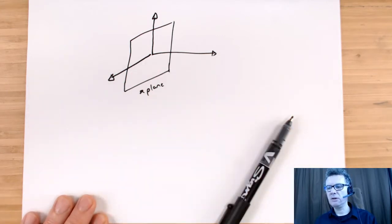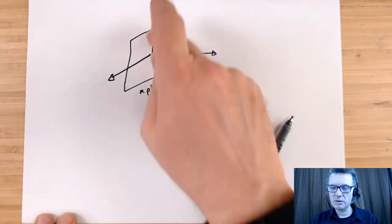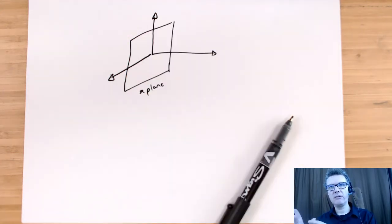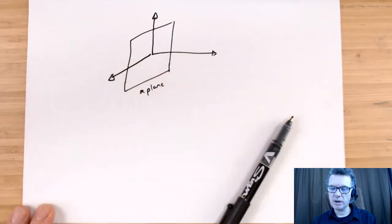So my first finger will be the first vector. That's the x-direction. Second finger will be the y-direction. So that's going up. And the thumb will be the z-direction. So that's coming out.